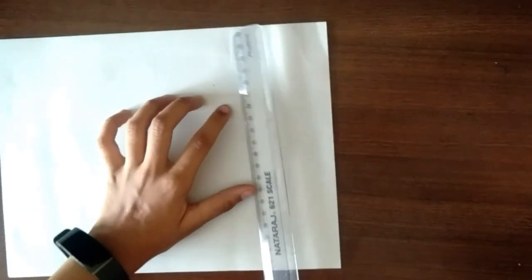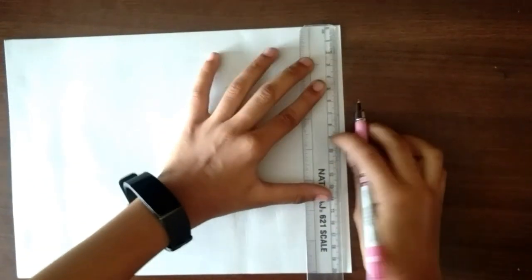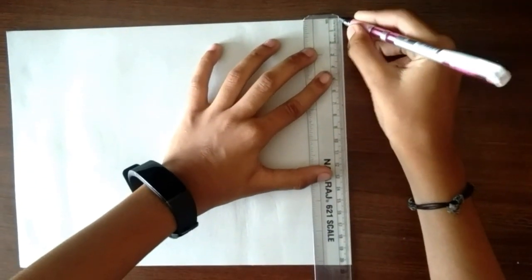First of all, take a thin cardboard and measure 12 centimeters. Make a square of size 12 centimeters.